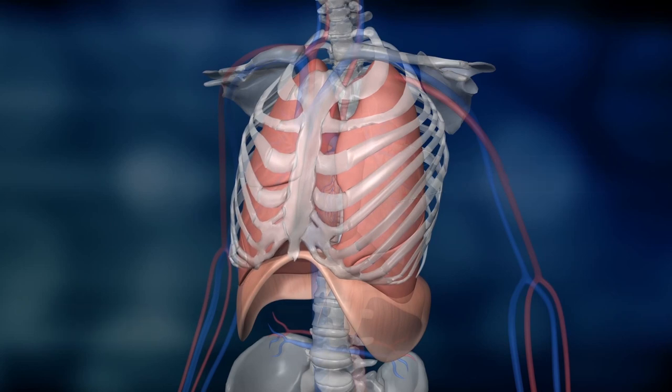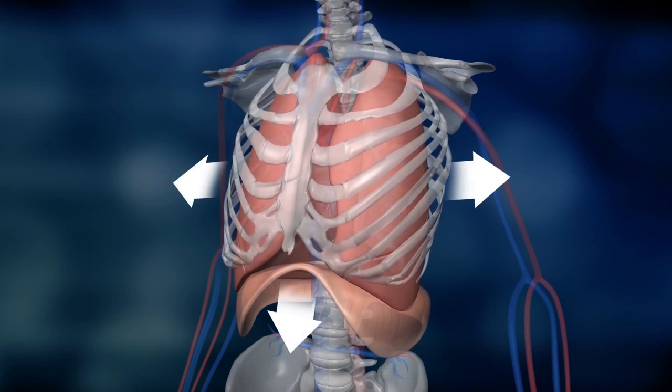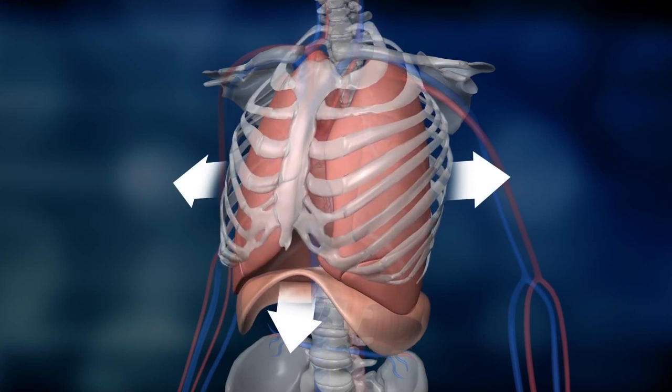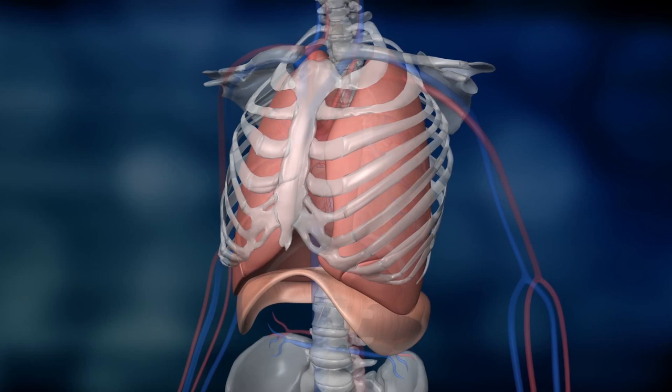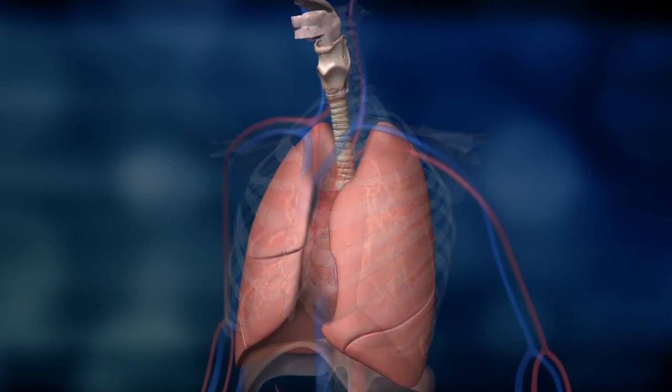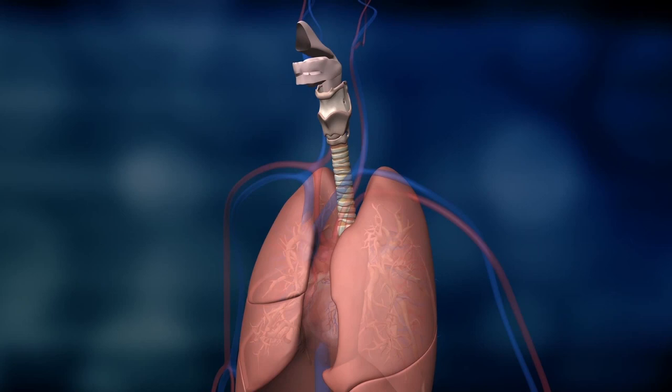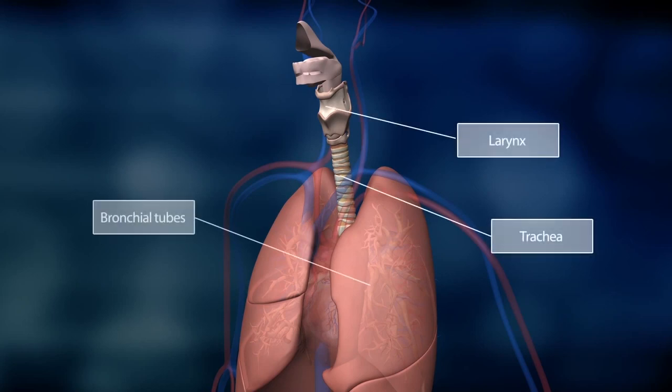When the muscles contract and the lungs expand, air is sucked in through the mouth and nose. This is called inhalation. The nose filters, moistens and warms the inhaled air before it passes through the larynx, trachea and the bronchial tubes.